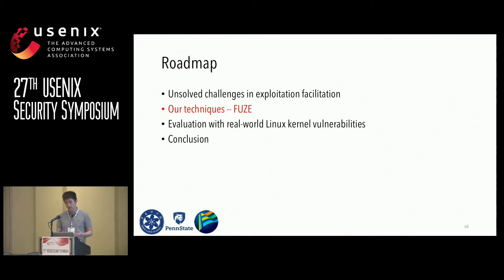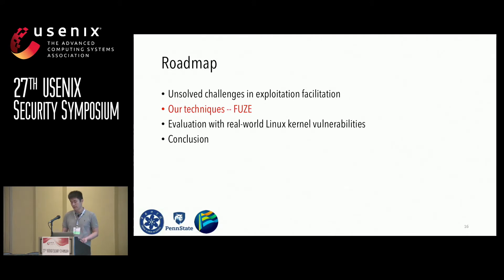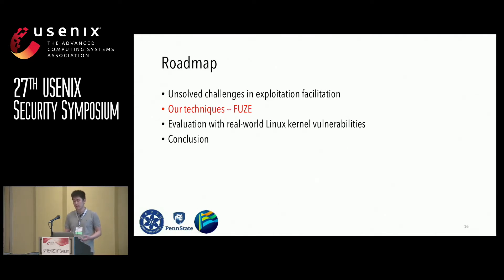Intuitively, if we can find different ways of dereferencing a dangling pointer, we can potentially find more exploitable primitives. To facilitate UAF exploitation by finding more ways of dereferencing the vulnerable object and identifying exploitable primitives, we design and implement a prototype system, FUSE. FUSE is designed to find more exploitable primitives for kernel use-after-free exploitation.